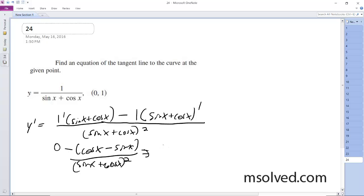So we end up with sine of x minus cosine x over sine x plus cosine x squared. And luckily they give us an easy point to work with.